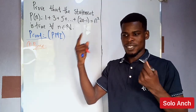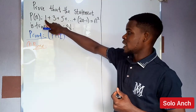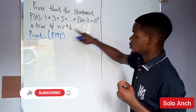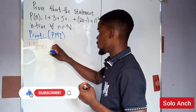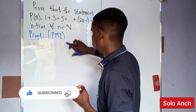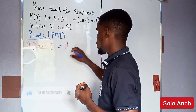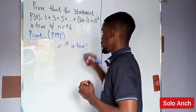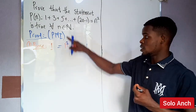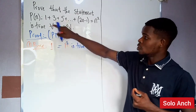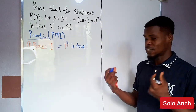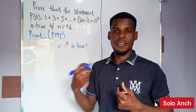When n equals one, the left-hand side is one, and the right-hand side is one squared, which is also one — so the statement is true. We can also check n equals two: one plus three equals four, which equals two squared. That is true as well, so the base case is verified.